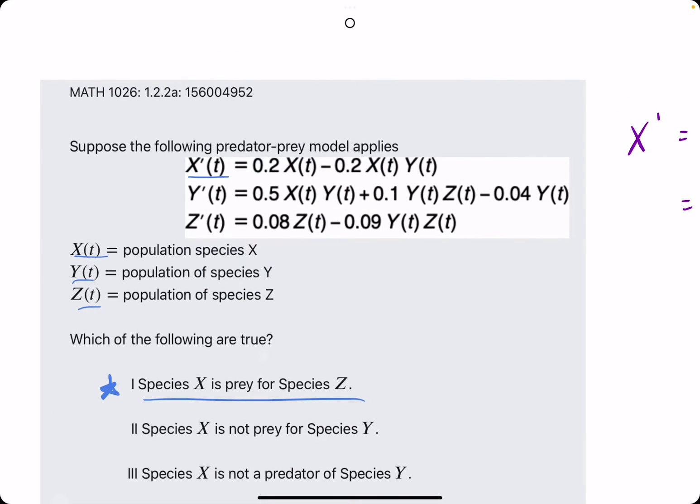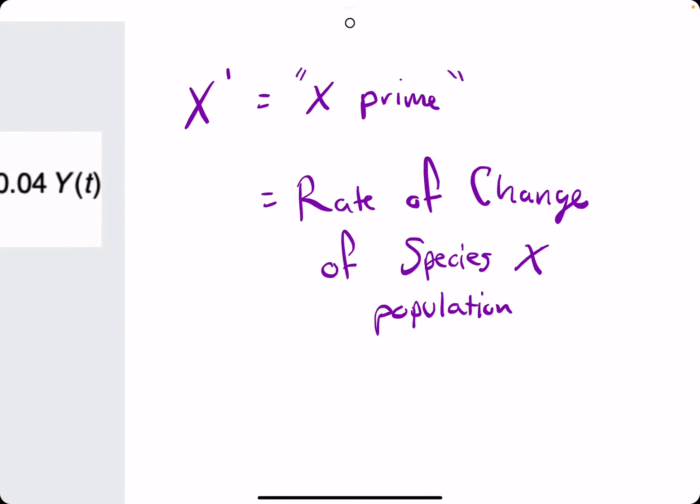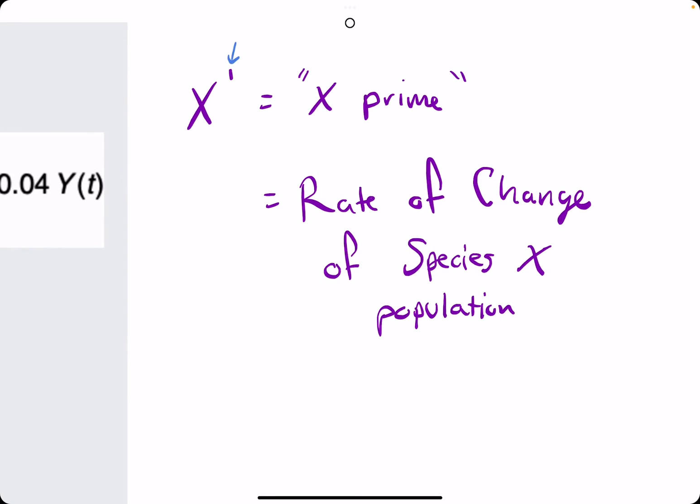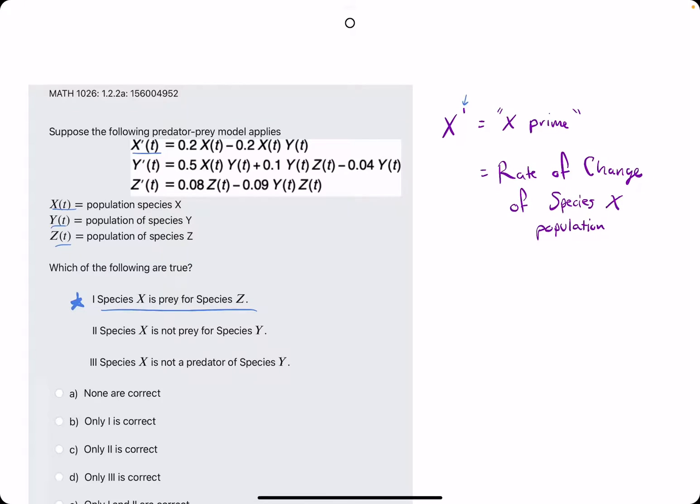is in the X prime equation. Let's take a little side note here. X with the apostrophe represents X prime—in other words, the rate of change of the species X population. That applies to Y prime and Z prime, representing the rate of changes of those populations.